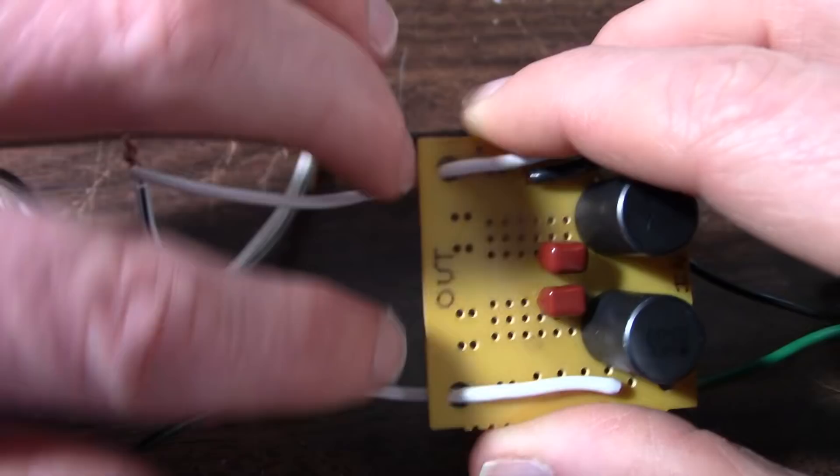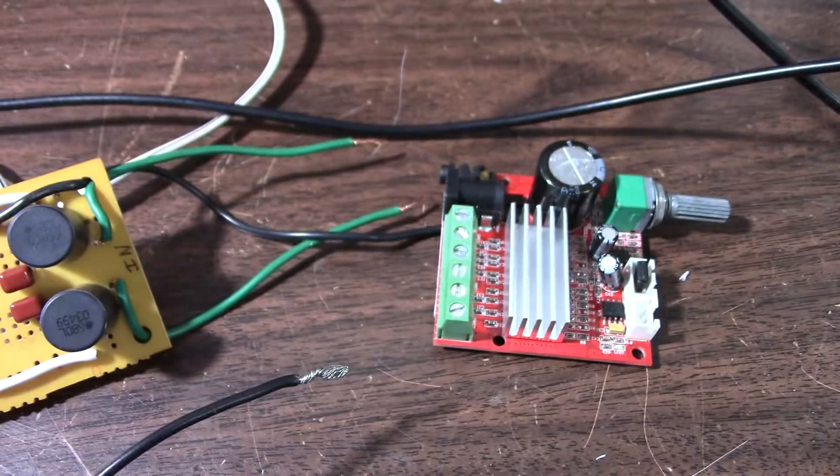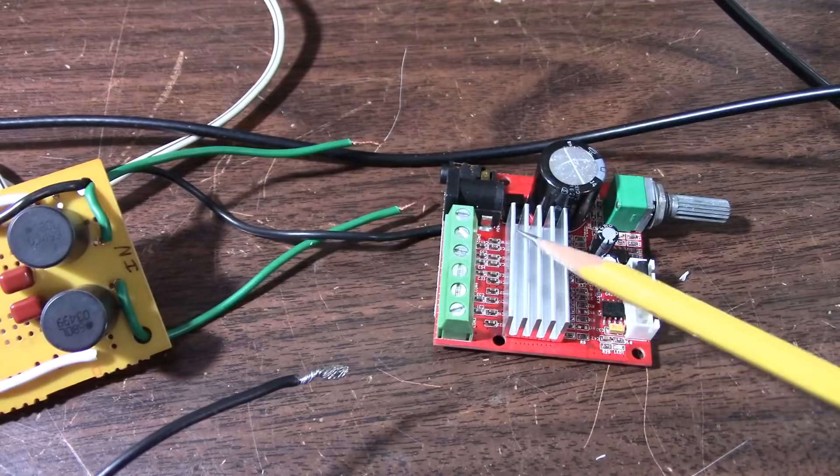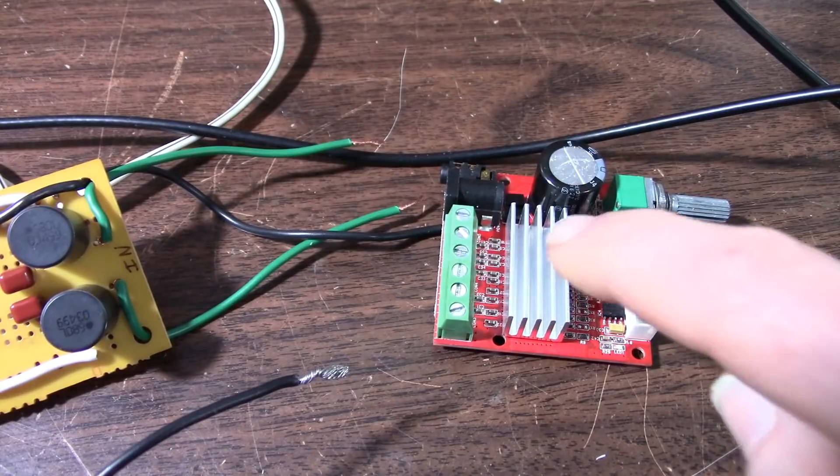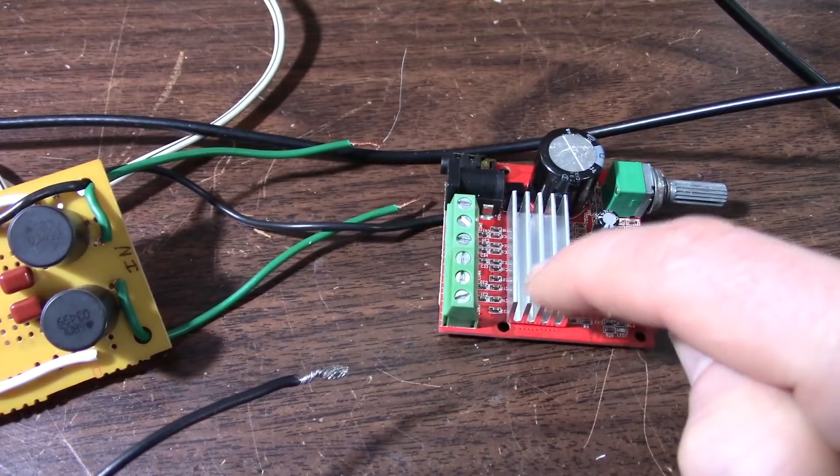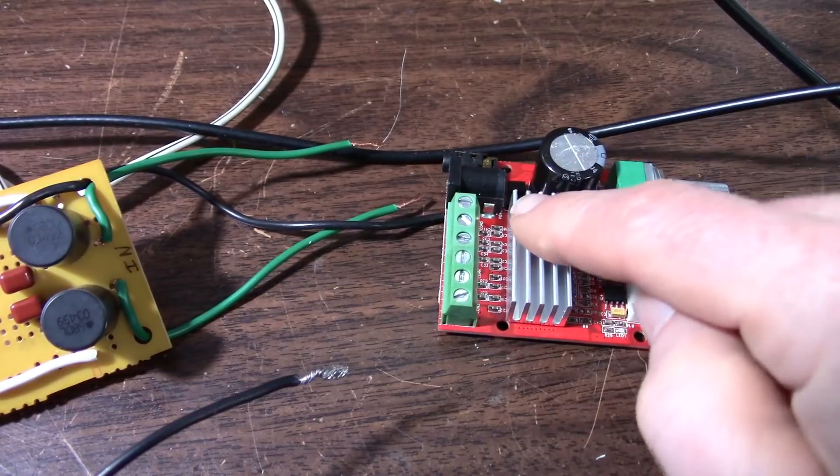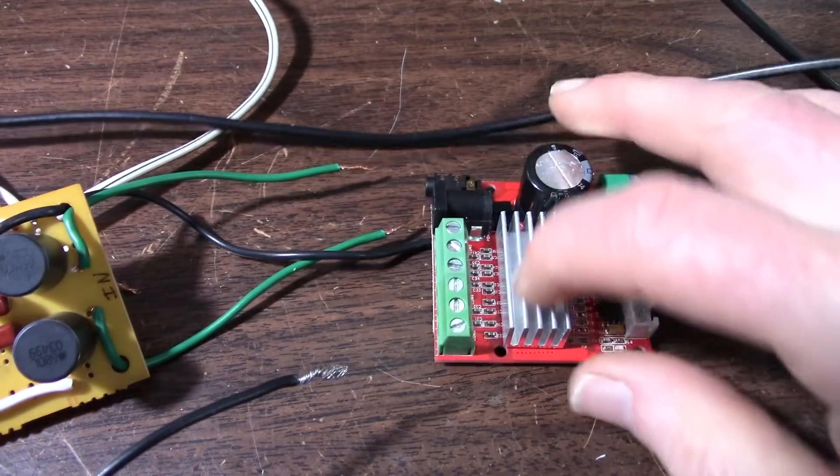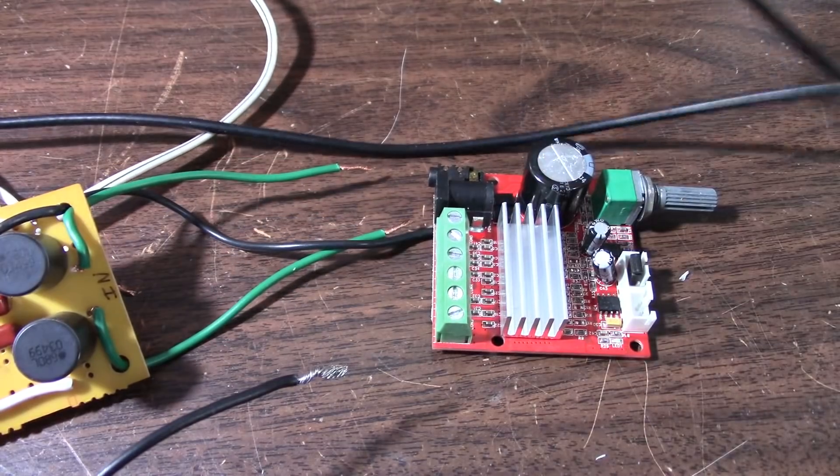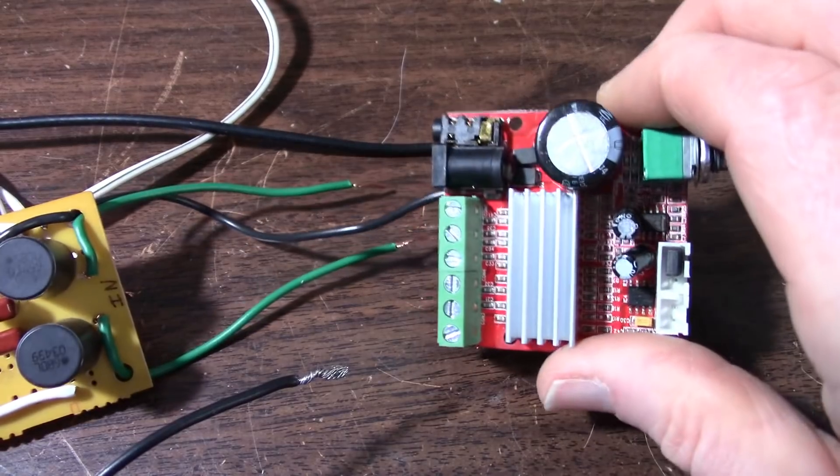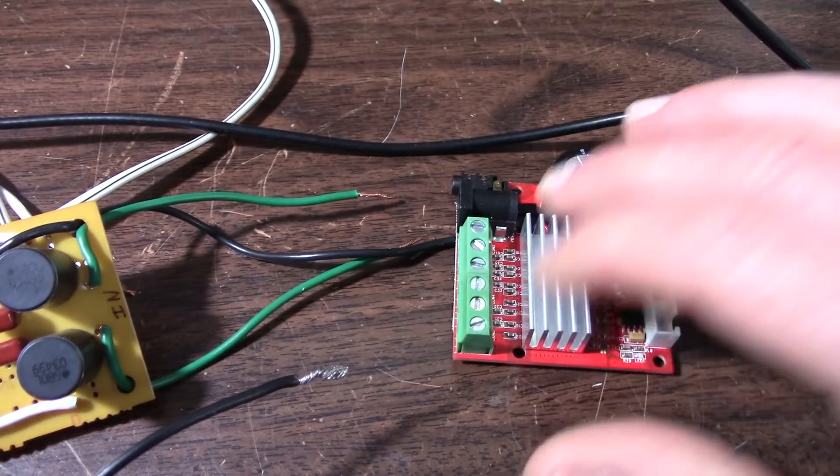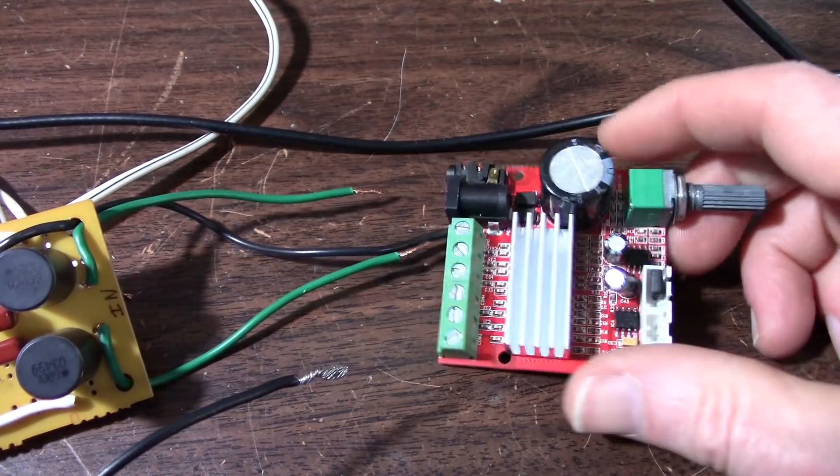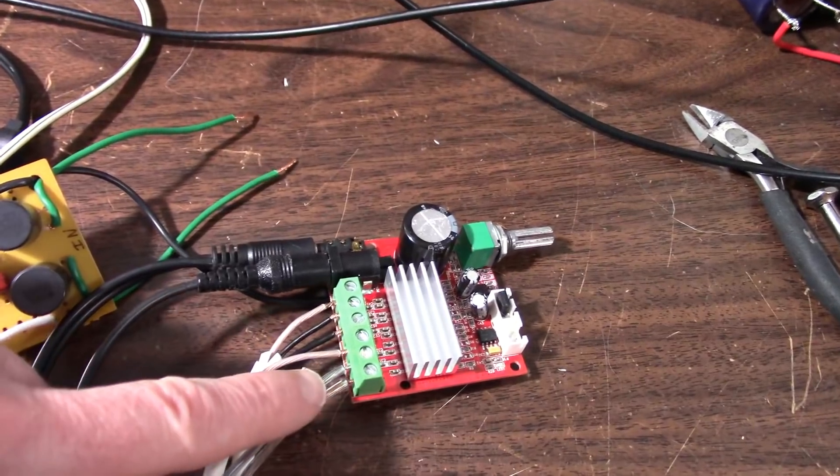One thing I'm a little concerned about is the size of this heat sink. It uses two power amplifier ICs and this pretty small heat sink is cooling both of them. I'll test it with eight ohm loads and see how hot the heat sink gets before testing with four ohm loads.